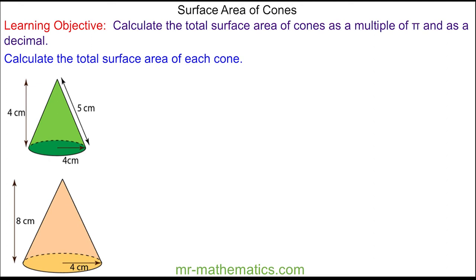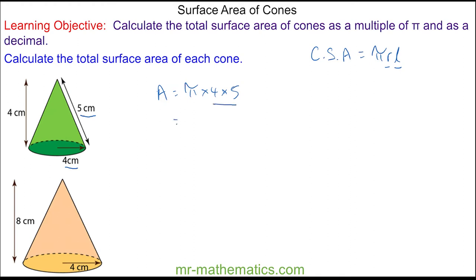Welcome to our lesson on finding the surface area of a cone. The formula for the curved surface area of a cone is pi multiplied by r multiplied by l, where l is the slant length — in this case five — and r is the base radius, which is four centimeters. So the curved surface area is pi multiplied by four multiplied by five. Four times five is twenty, so the curved surface area is twenty pi centimeters squared.